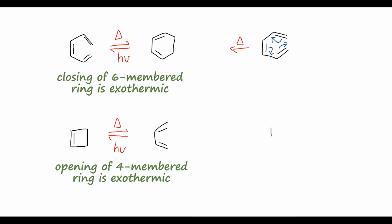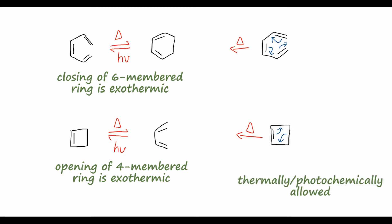Similarly, if we take the cyclobutene starting material, upon heating the pi bond on the left swings up to form a pi bond between the top two carbons, and then the carbon-carbon sigma bond on the right comes down to open up the ring and form another pi bond between the bottom two carbons. These reactions are named electrocyclic because they involve pairs of electrons moving in cyclic fashion, and they can be thermally or photochemically driven — using heat for the forward reactions, or light for the reverse reactions.